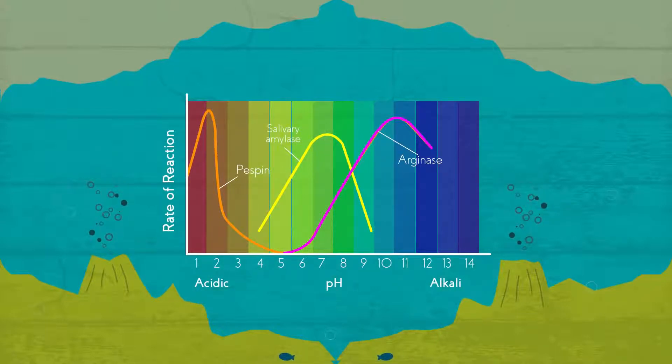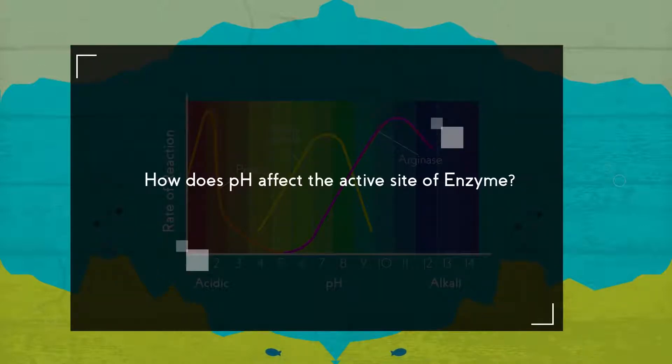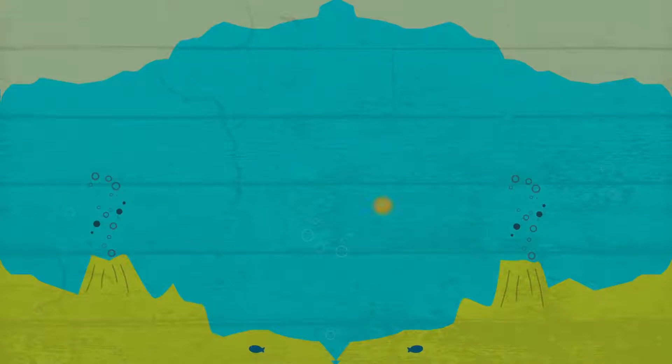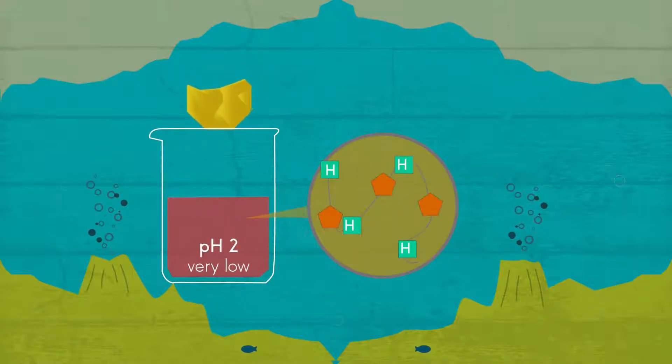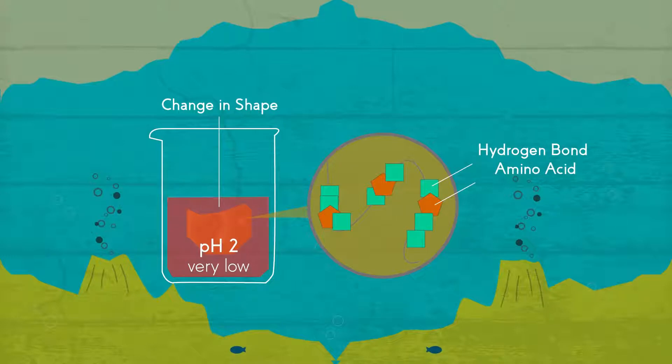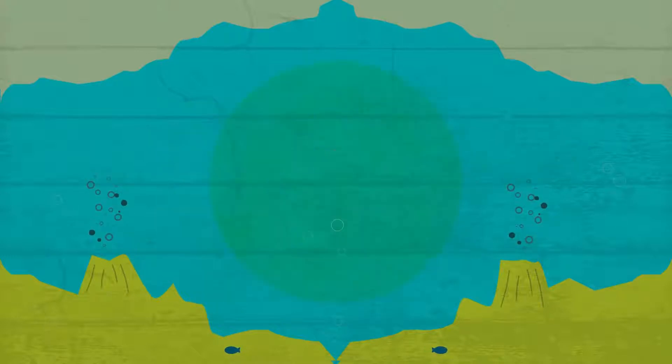How does pH affect the active site of enzymes? If the pH is too low for the enzyme, then the concentration of hydrogen ions will be greater than normal and these will interact with amino acids, leading to a change in shape of the active site, thus reducing the rate of the reaction.